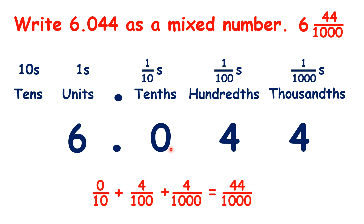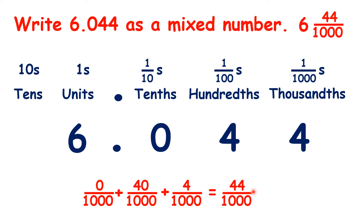In our decimal number, we have 0 tenths, four hundredths, and four thousandths. Of course, 0 tenths is the same as 0 thousandths. With 4 hundredths, we can find our equivalent fraction by multiplying the numerator and denominator by 10, and that gives us 40 thousandths. So, that's 0 thousandths plus 40 thousandths plus 4 thousandths, which is why we have 44 thousandths as the fraction of our mixed number.